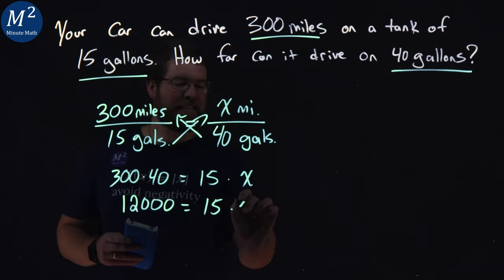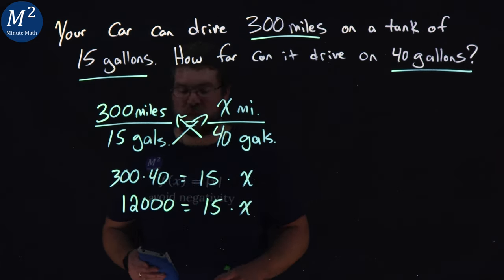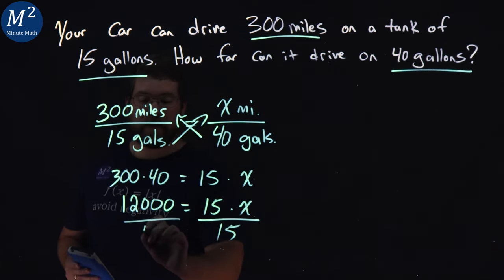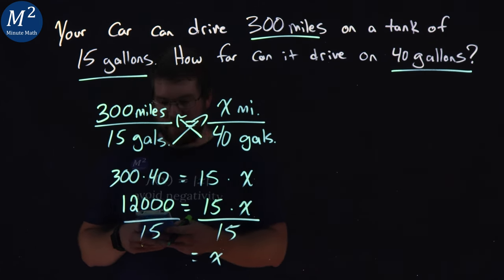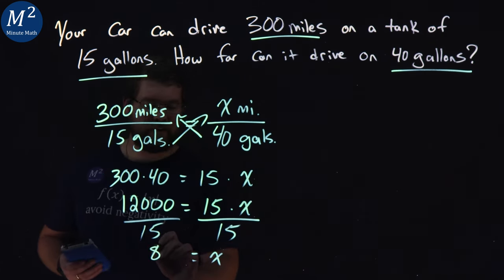Equals 15 times X. Then we want to divide both sides by 15 to get X by itself. And 12,000 divided by 15 is 800.